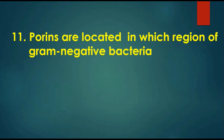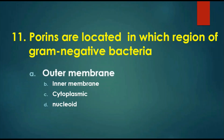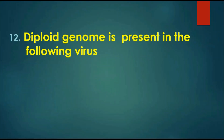Question 11: Porins are located in which region of gram-negative bacteria? Options are: A) outer membrane, B) inner membrane, C) cytoplasmic, D) nuclear. The answer is the outer membrane — the LPS (lipopolysaccharide) region.